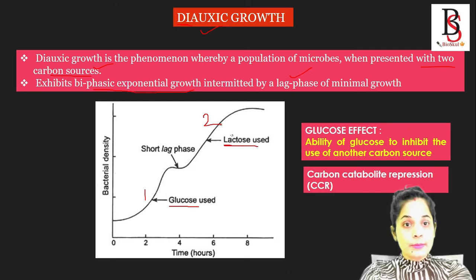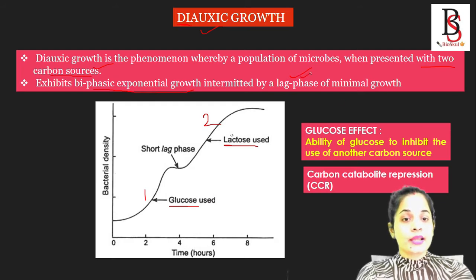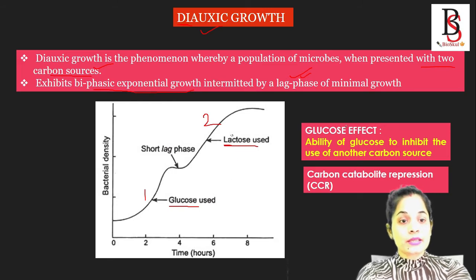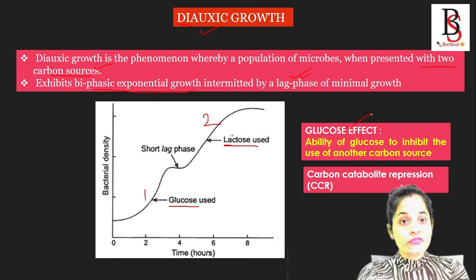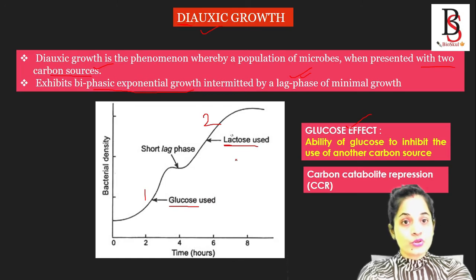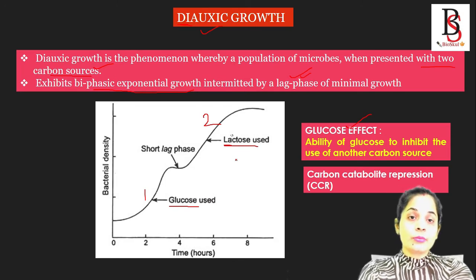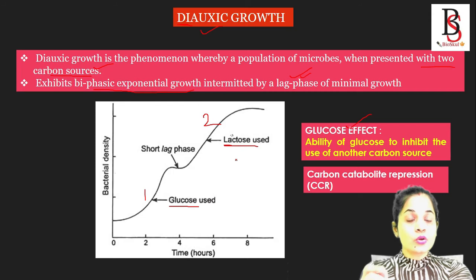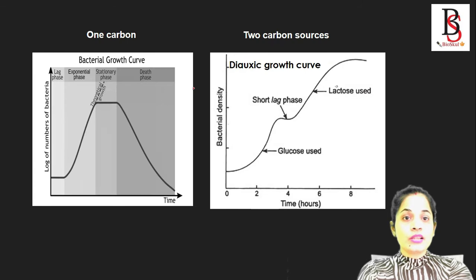In diauxic growth, bacteria use two carbon sources and produce two exponential phases intermitted by a lag phase. This is also called the glucose effect — a very important term to remember. It is called the glucose effect because of the ability of glucose to inhibit the use of another carbon source. If glucose is present in the media, the bacteria first consume the glucose and it inhibits the use of another carbon source. That is why it is also known as the glucose effect, or carbon catabolite repression, or CCR.